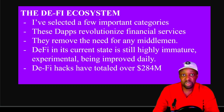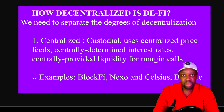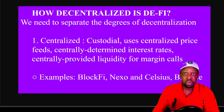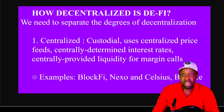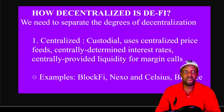How decentralized is DeFi right now? We need to separate the degrees of decentralization. First is centralized — it's custodial, they hold your coins, use centralized price feeds, and control prices. For example, Bitcoin's price on Coinbase could be completely different from Binance or Kraken. They determine interest rates based on platform profitability and centrally provide liquidity for margin calls. Examples include BlockFi, Nexo, Celsius, Gemini, and others. You also have to KYC and abide by local regulations.